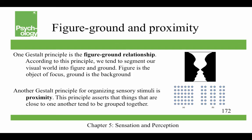Another Gestalt principle is proximity — things that are close to one another tend to be grouped together. For example, you'll see three columns of dots rather than rows because, based on their proximity, we perceive them as columns.